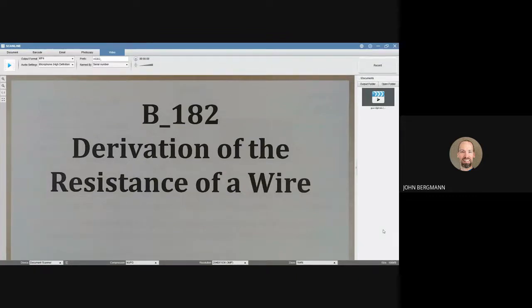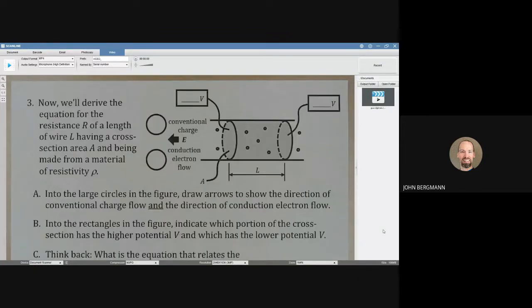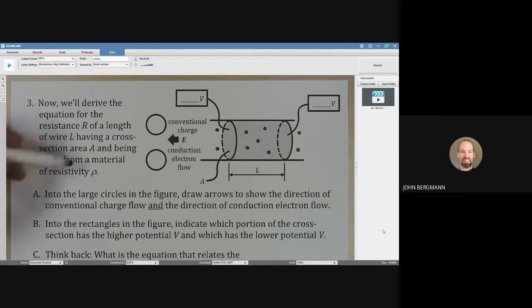Derivation of the resistance of a wire. Now, we'll derive the equation for the resistance R of a length of wire L, having a cross-sectional area A, and being made from a material of resistivity rho. So, cross-sectional area A, length L, and we're looking for the resistance.